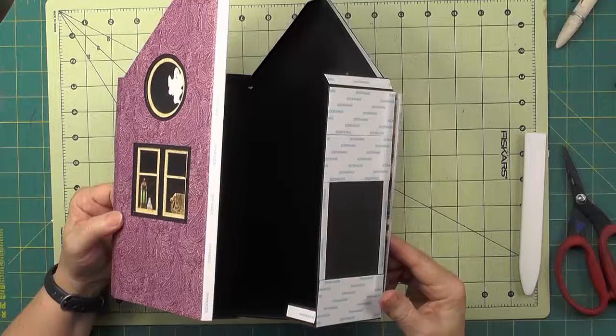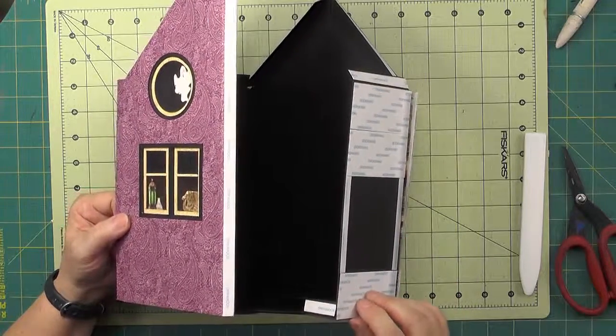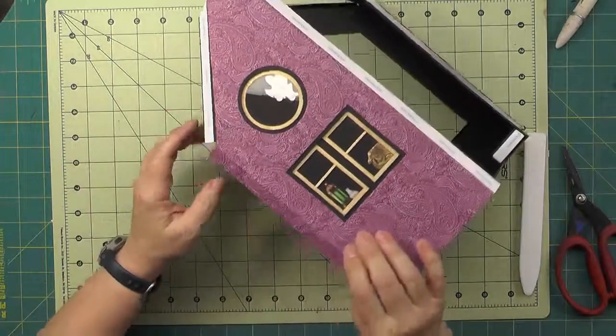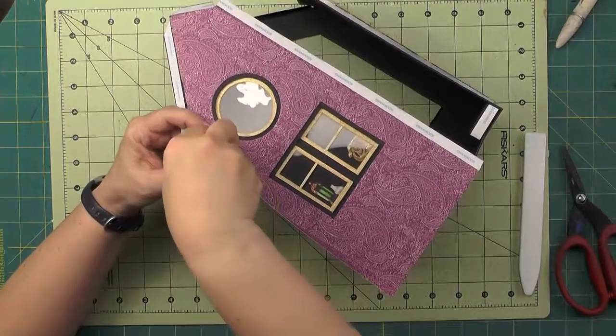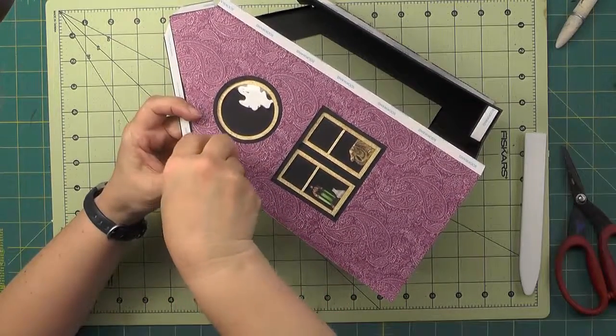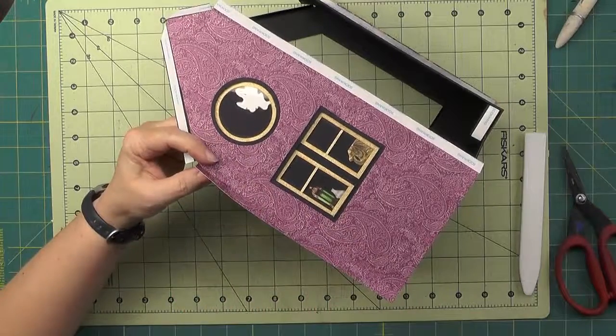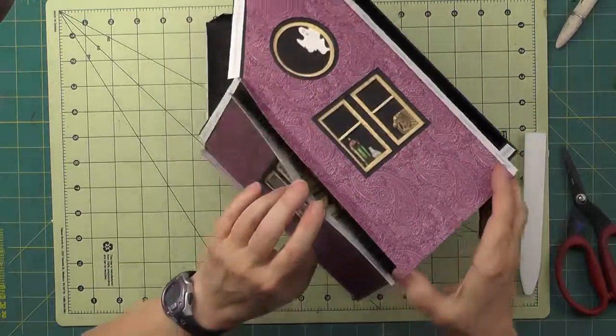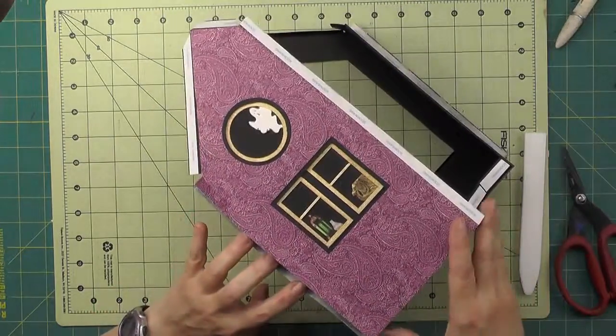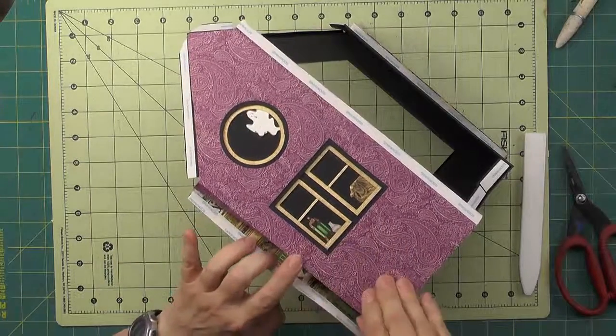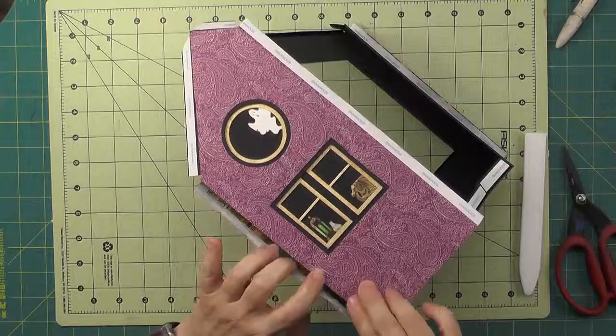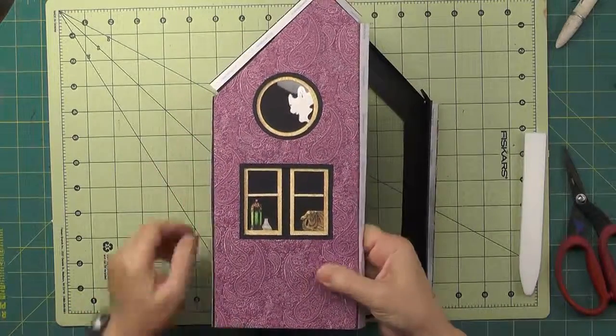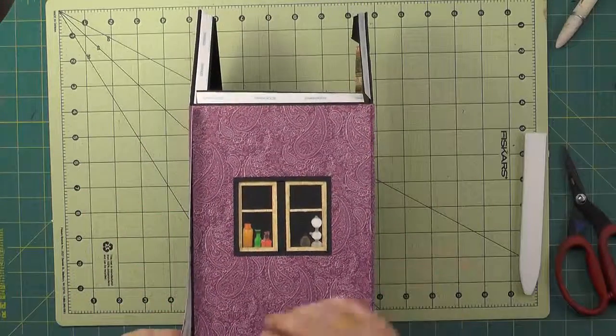Now I have the four walls attached to the base and I'm going to continue putting the patterned paper on. On the long tabs here we'll remove that score tape backing and then pull this facing side out of the way and attach that tab down.